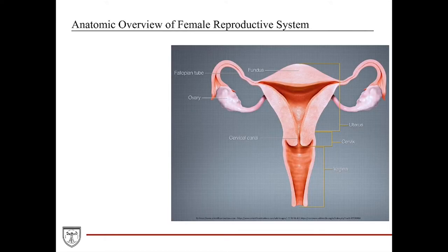The female reproductive system consists of the two ovaries, which are suspended within the pelvic cavity by the suspensory ligament, which goes up laterally and superiorly, and the ovarian ligament, which attaches the medial aspect of the ovaries to the lateral aspect of the uterine body. Another component of the female reproductive system would be the uterus.